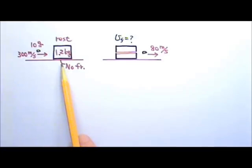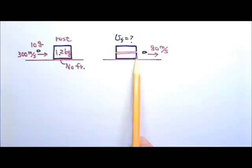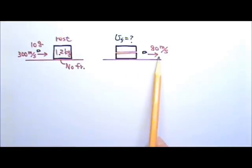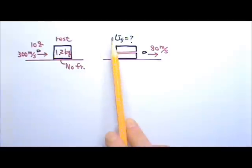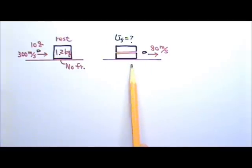A 1.2 kg block is at rest on a frictionless surface. Then a 10 g bullet traveling at 300 m per second penetrates the block and emerges with a speed of 80 m per second. Find the speed of the block immediately after the bullet emerges.